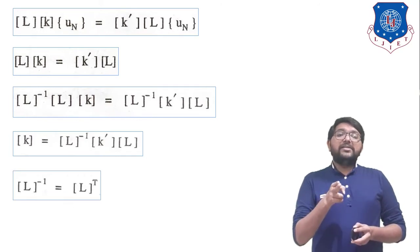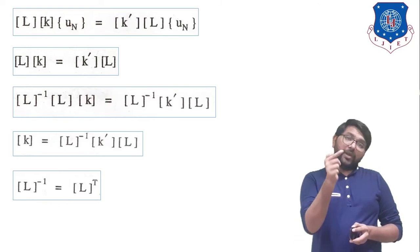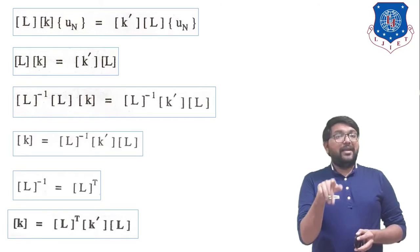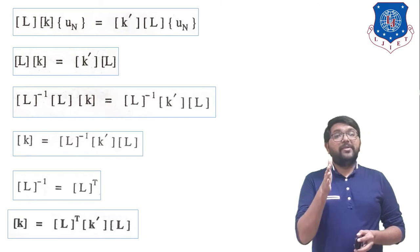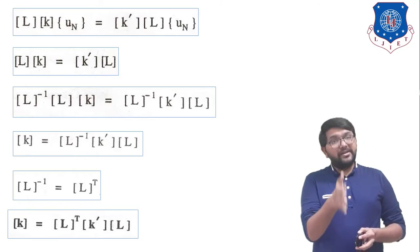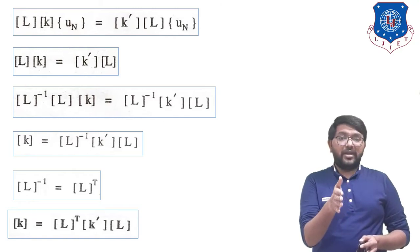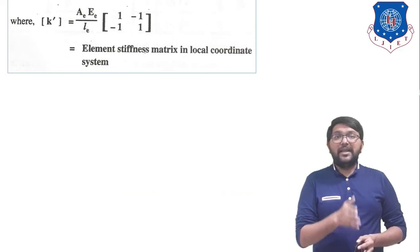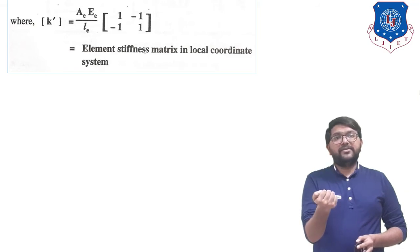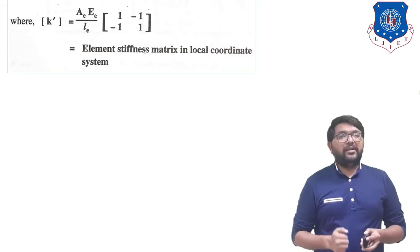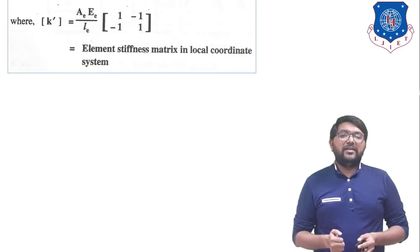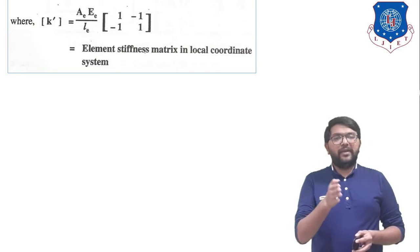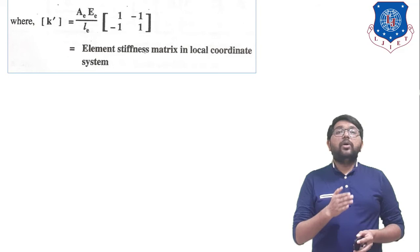Since L⁻¹ = Lᵀ for a transformation matrix, we can write K = Lᵀ·K'·L. Here K is the element stiffness matrix in global coordinates, L is the transformation matrix, and K' is the element stiffness matrix in local coordinates. K' = (AE/L)·[1, −1; −1, 1], which we derived in a previous session, where A is cross-sectional area, E is modulus of elasticity, and L is length of element.